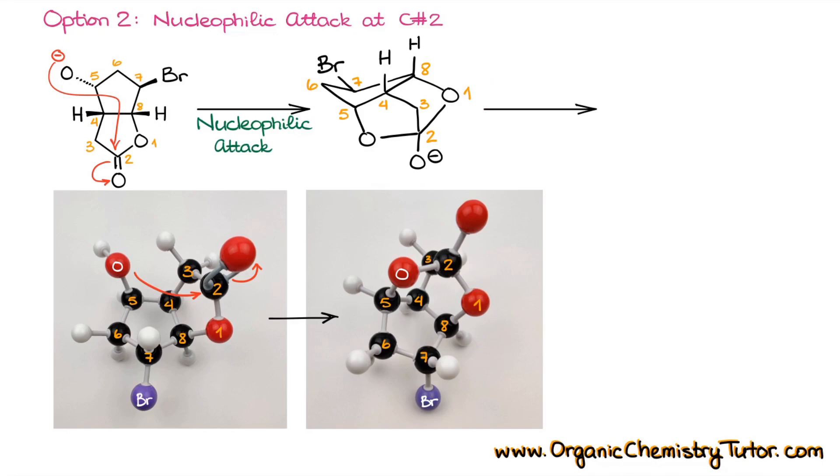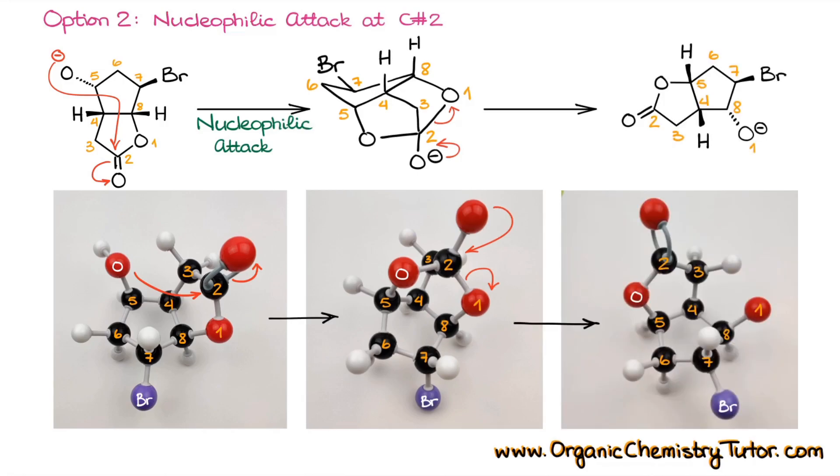Once we form this intermediate, this tetrahedral intermediate if you like, the way we would call it in the chemistry of esters, we can easily do the leaving group dissociation, which is again a very typical type of step for tetrahedral intermediate decomposition in the acyl chemistry. That gives you a leaving group dissociation which is now going to break the bond between atoms one and two, and giving you another ester and another alkoxide.